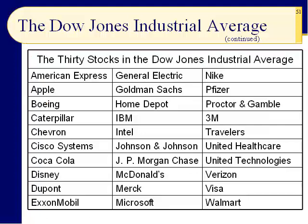Slide 51: here are the 30 stocks in the Dow Jones Industrial Average as of this recording. You know most of these companies. Is McDonald's an industrial company? Or Disney? These are not industrial companies. But General Electric — that's the company that was one of the first to be in the Dow in 1896 and is the only one left from those original 12. United Technologies makes Otis Elevators, Pratt & Whitney jet engines, and Sikorsky Helicopters. Boeing makes planes, Caterpillar makes earth-moving equipment — those are industrial companies.